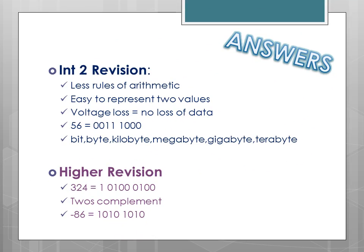Answers for revision questions. Reasons for the use of the binary system are: they are reliable for arithmetic, easy to represent two values, and voltage loss doesn't affect the data. Number 56 in binary is 00111000. And in ascending order, the storage terms are: bit, byte, kilobyte, megabyte, gigabyte, and terabyte.